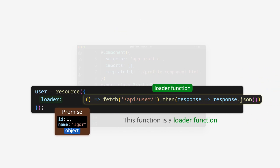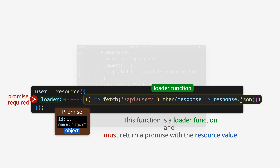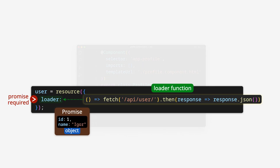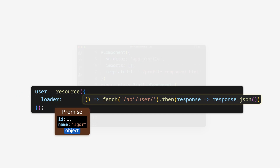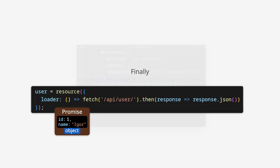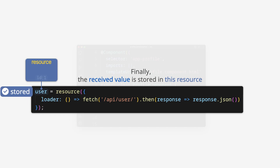This loader function must return a promise with the resource value. In this example, this is exactly what the fetch function does. Finally, the received value is stored in this resource.